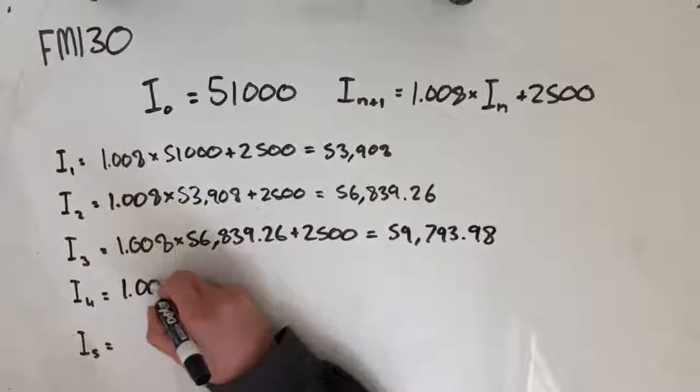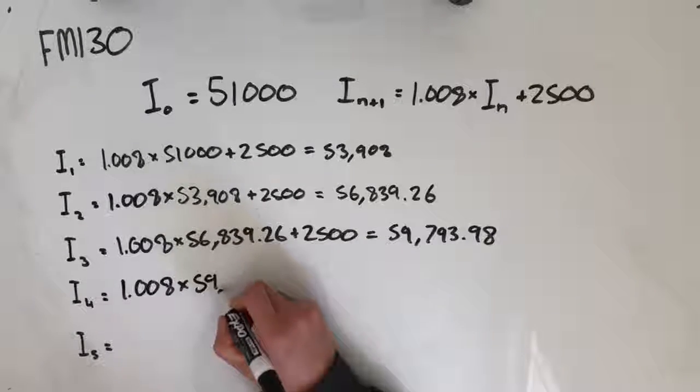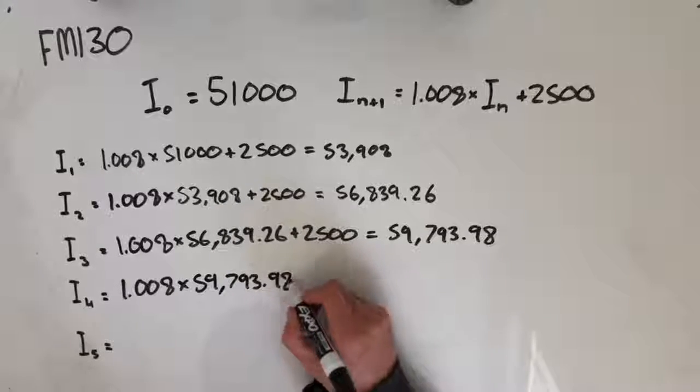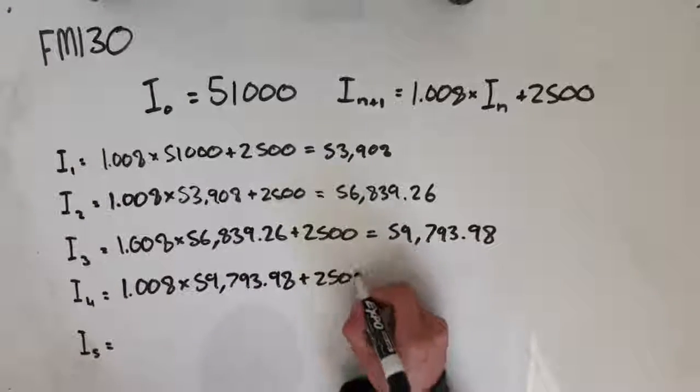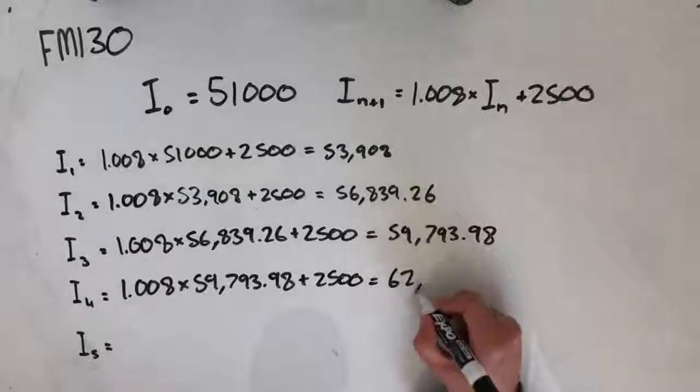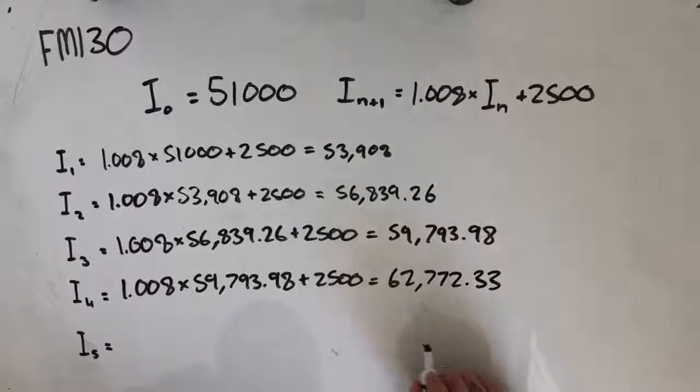Going through the motions again, taking our value of I3 to find I4: 1.008 times 59,793.98 plus 2,500 is going to give us a value here of 62,772.33. So, $62,772.33.